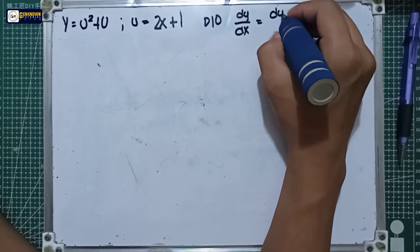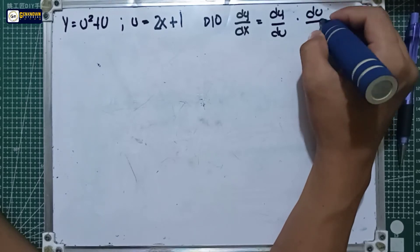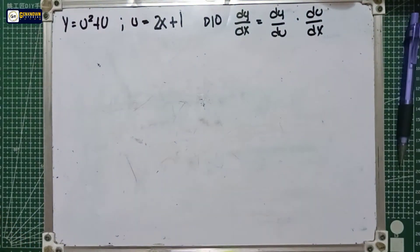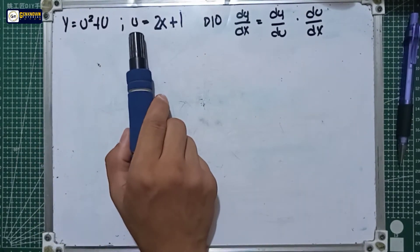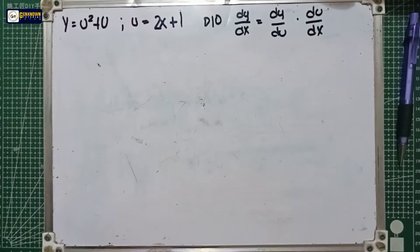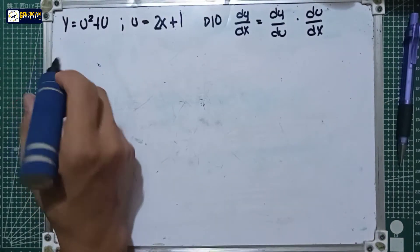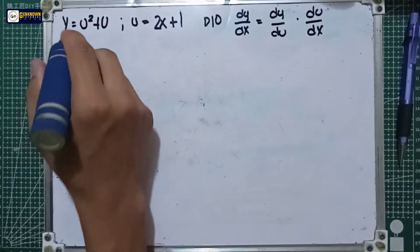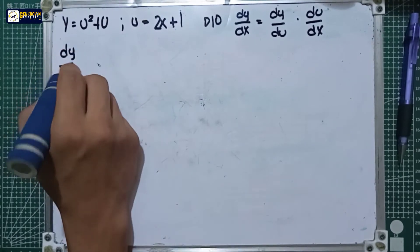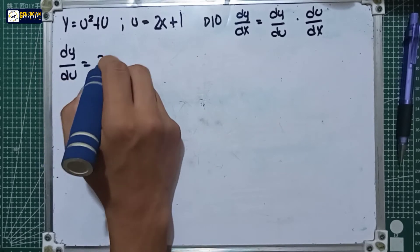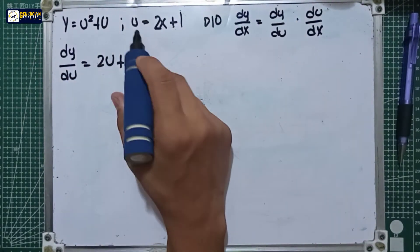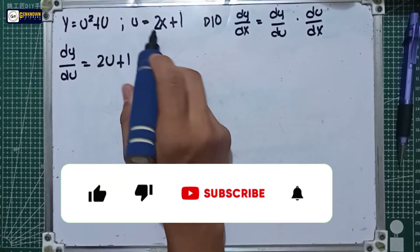The formula is: dy over dx equals dy over du multiplied by du over dx. Take note that for the y equation, we derive with respect to u, and for the u equation, we derive with respect to x. So for the y equation: dy over du equals the derivative of u squared plus u, which by the power rule gives 2u plus 1.